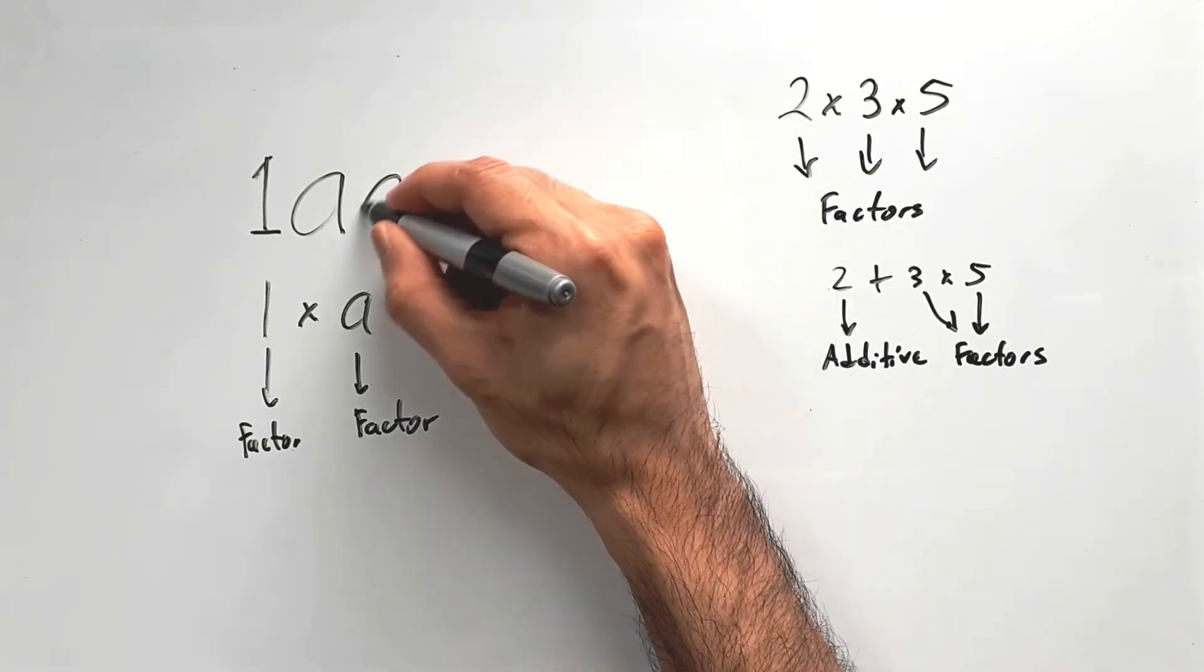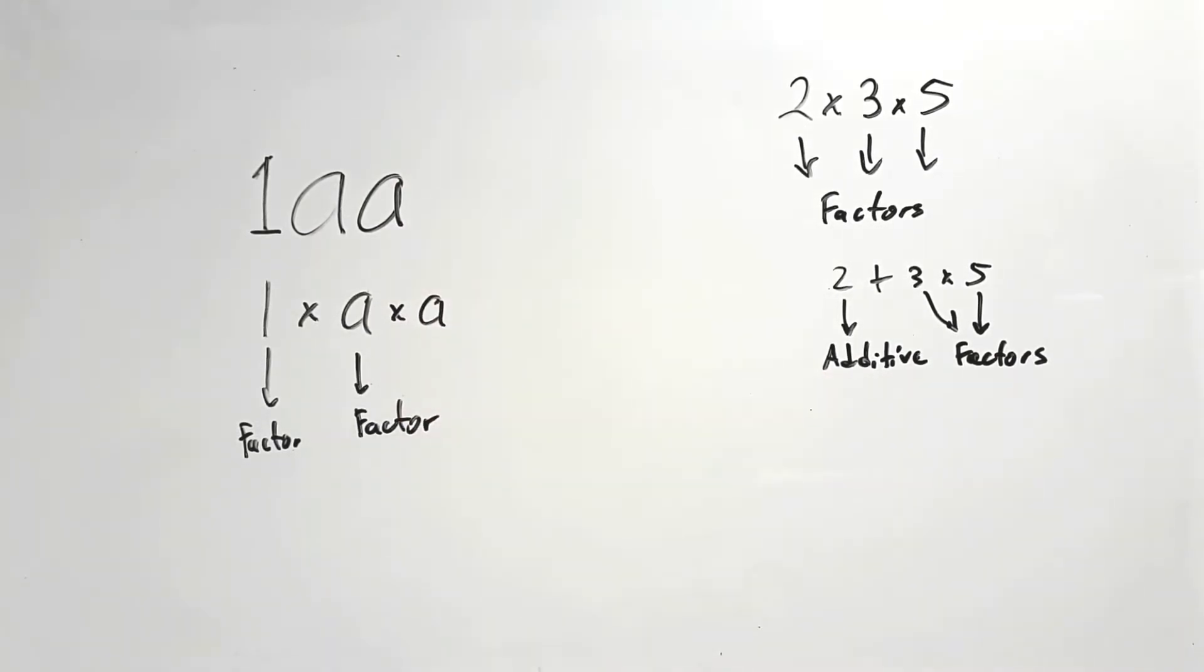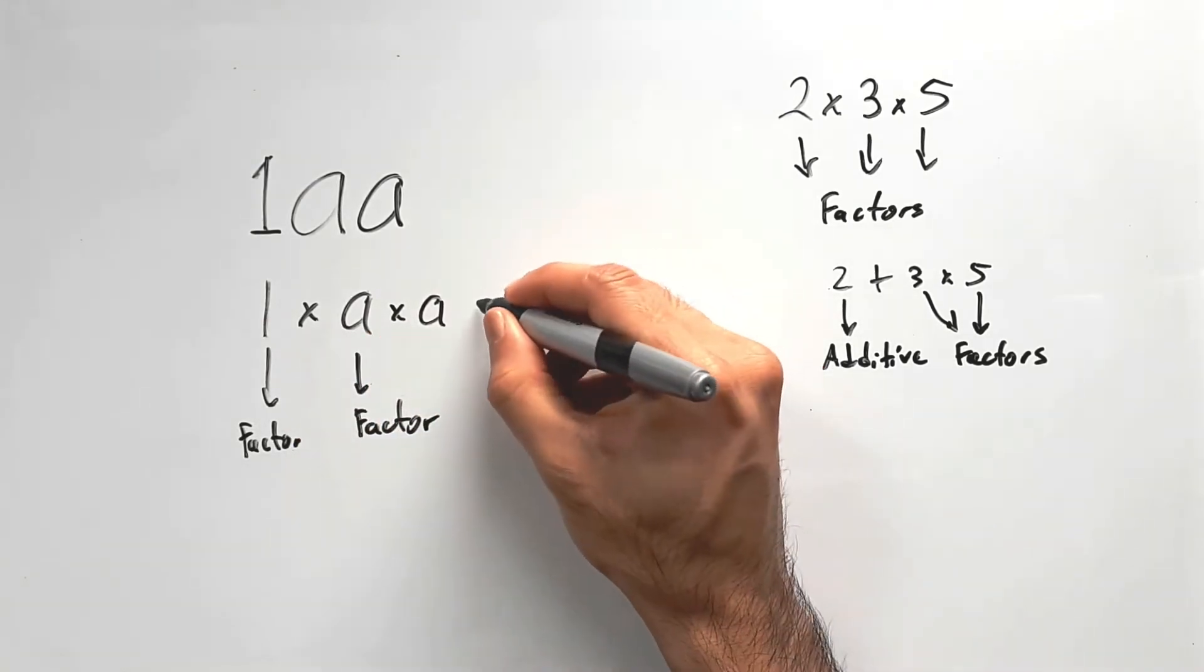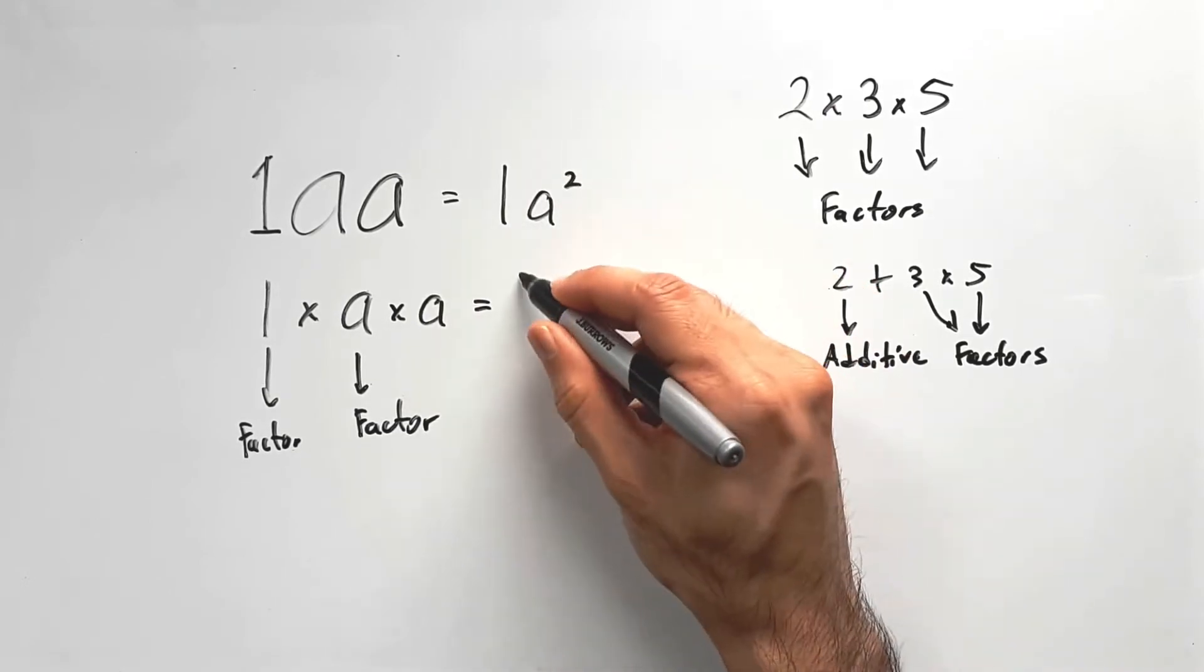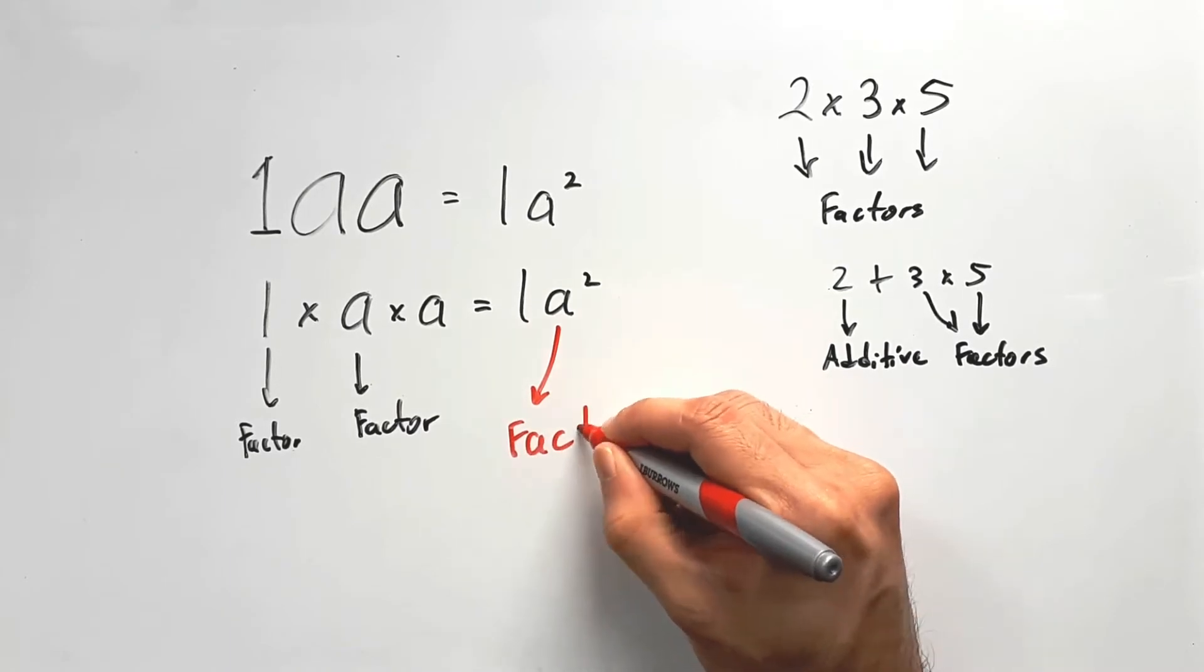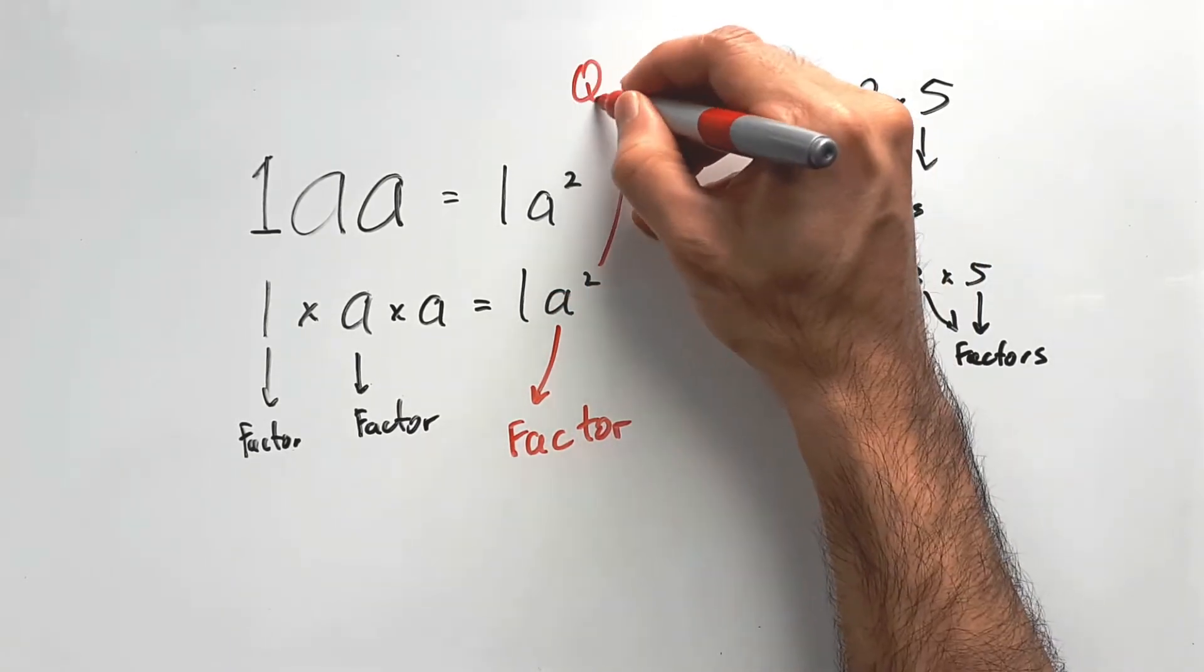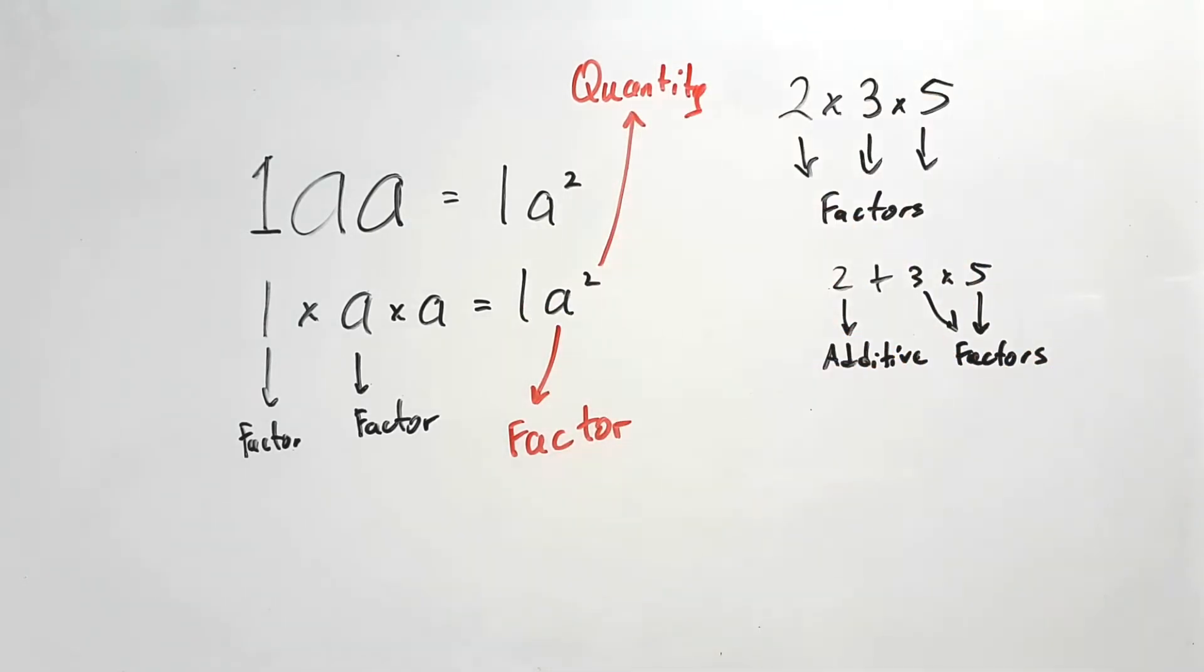So let's just say I put in another factor of A here. This is the same as saying 1 times A times A, which means 1 is multiplying A twice. So we could summarize both of these into the same thing. We can say 1A squared. So while the A represents some sort of factor that's multiplying 1, 2 represents a quantity, a quantity of factors that you're using to multiply 1.